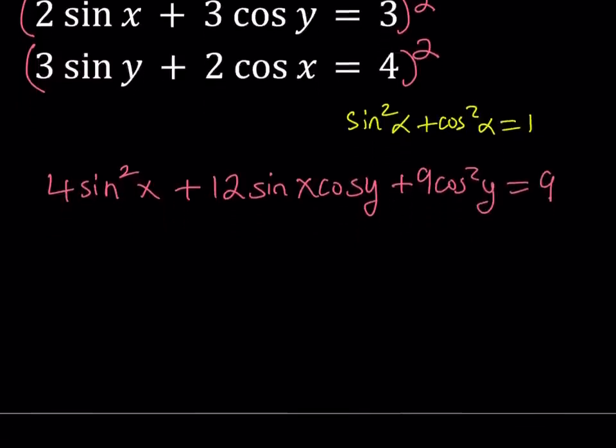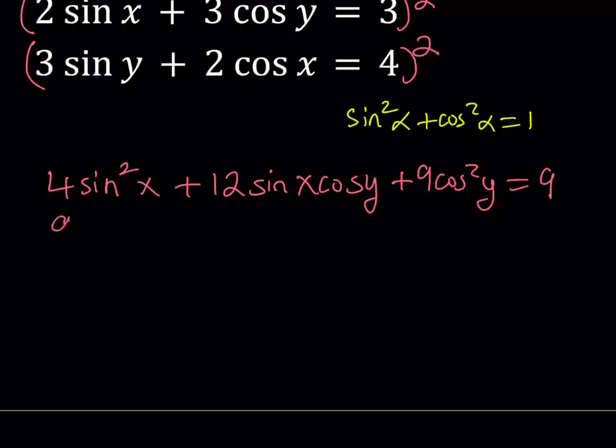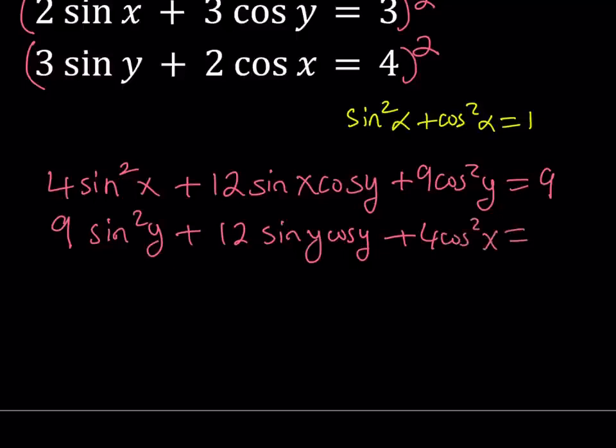And if you square the second one, that should give you 9 sine squared y plus 12 sine y cosine x, plus 4 cosine squared x. And that should equal 4 squared, which is 16.